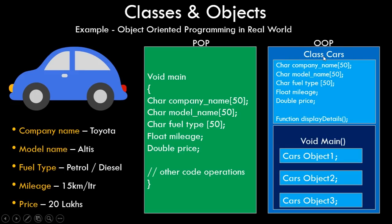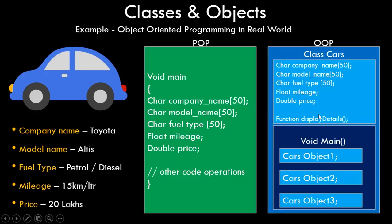In the object oriented paradigm, we create a class — pretty much like a structure — that has all those variables plus a display details function. This class definition sits outside the main function. Inside main, we create an object of type cars. Instead of creating five individual variables, we create one variable — object one — whose data type is cars. Cars is now a user defined data type with all five variables inside. Similarly we create another object of the same class, and each object has its own individual set of five variables and associated functions, making the code much easier to manage.